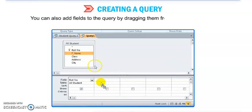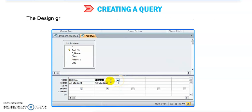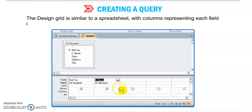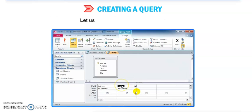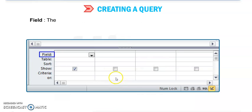You can also add fields to the query by dragging them. Design grid is similar to a spreadsheet. You can see this is like a spreadsheet window with columns representing each field in the query. Now let us understand the design grid. What is design grid?